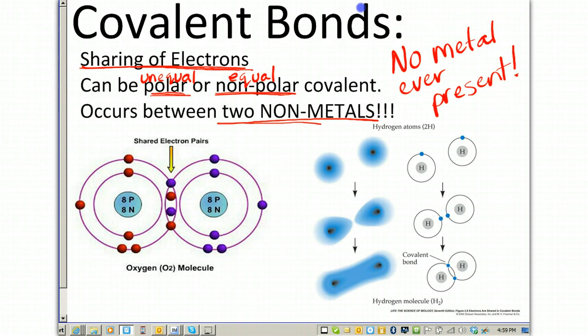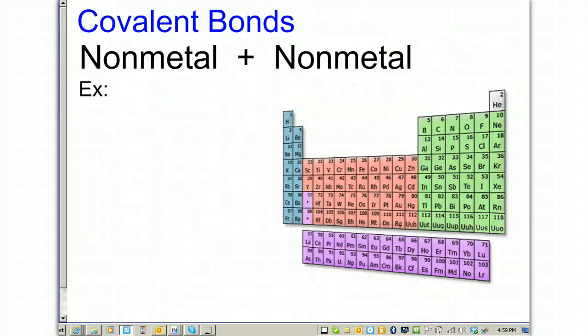It's the quickest way to tell when you have a covalent bond if there is no metal present. Covalent bonds are a non-metal plus a non-metal. Recall on the periodic table, here's the staircase starting at boron, and everything on the right side of that staircase are the non-metals. So an example of a covalent bond might be CO2, carbon dioxide, with carbon element number 6 and oxygen element number 8, both being non-metals.